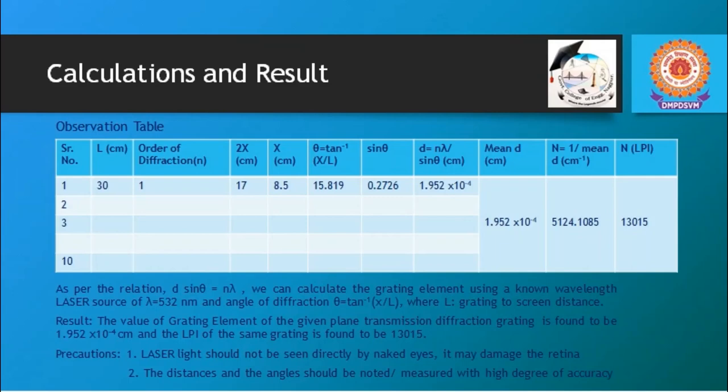We have seen the experimental section. Now we should look for calculations and result. We have seen that the l was 30 cm that means slit to screen distance was 30 cm. We have considered order 1 of the diffraction that is n equals to 1 in our case. And the left to right first order diffraction spot distance was 17 cm. That means distance between two spots observed at the left and right of the principal maxima was 17 cm. So we have taken x equals to 8.5 that means dividing it by 2.